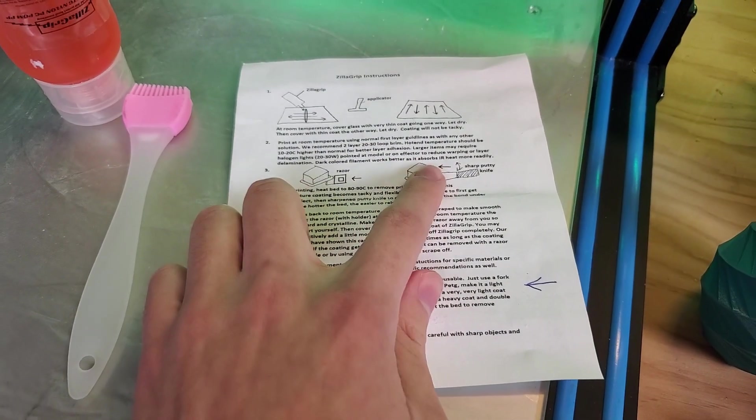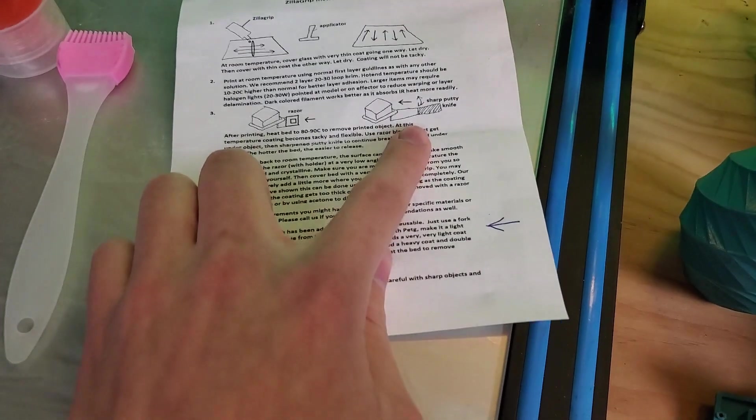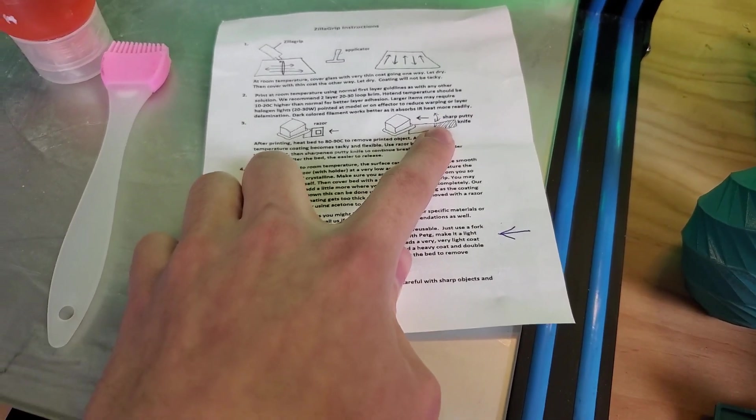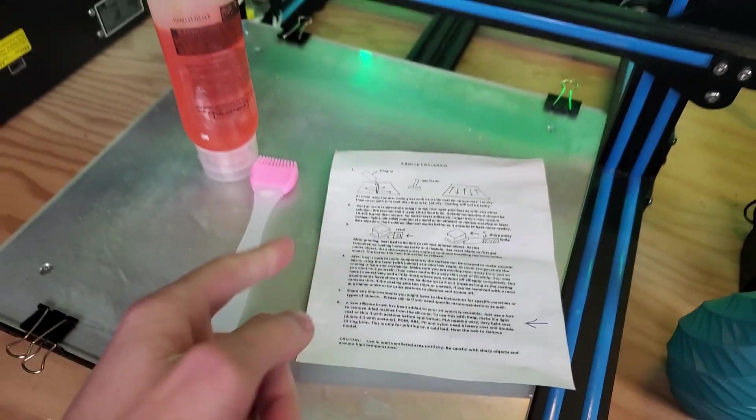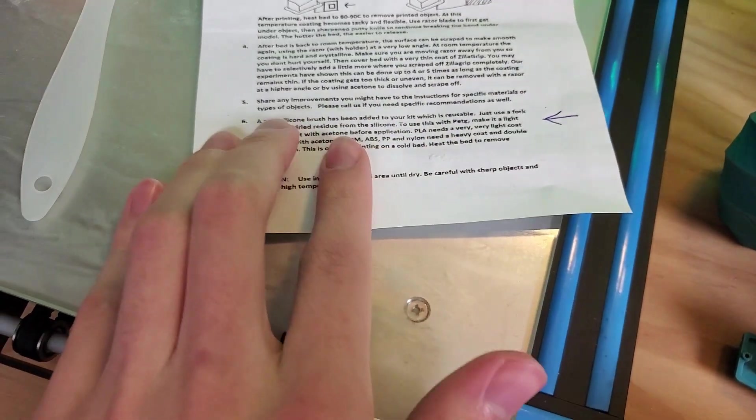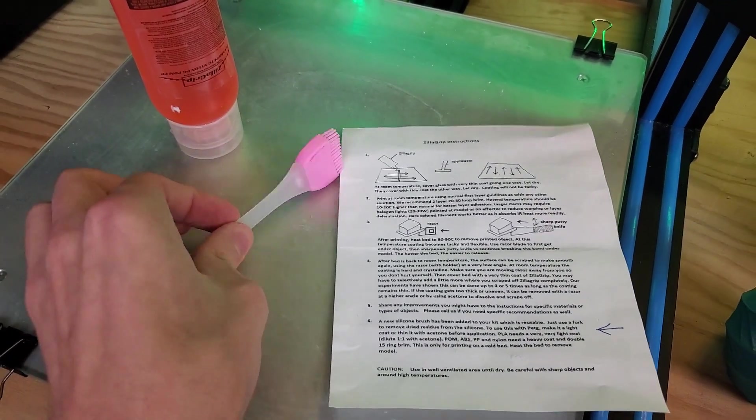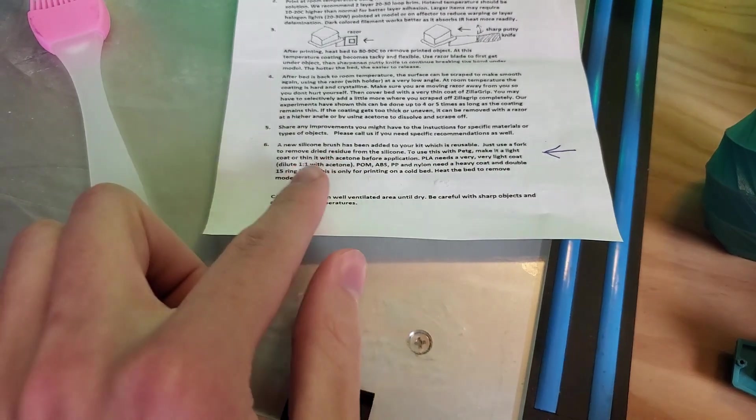When it's done printing, you heat up the bed and you can use a razor, spatula, or sharp putty knife to go under the part and pop it off the bed. Down here it comes with the silicone brush, which is pretty cool, and they say you can use a fork to remove the dry residue from the silicone after we finish using it.